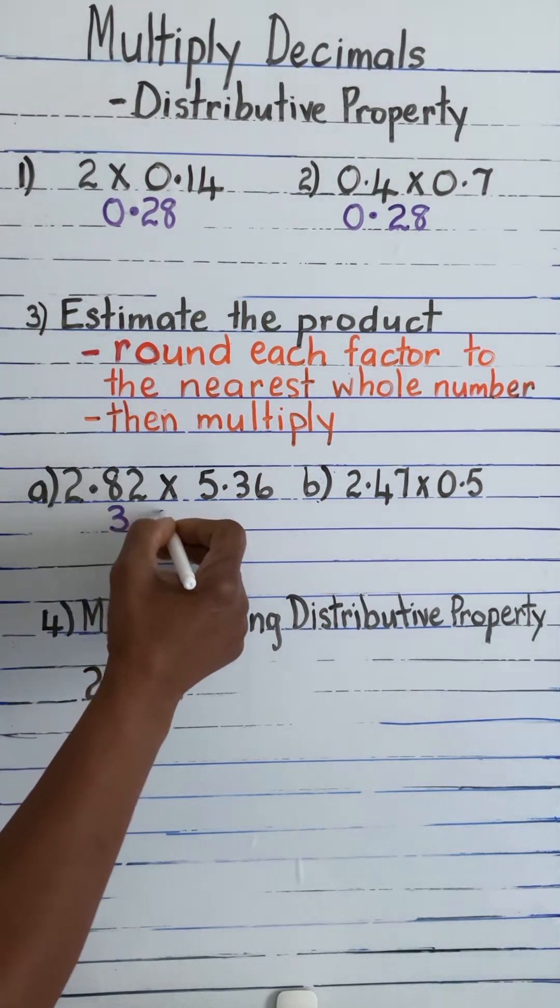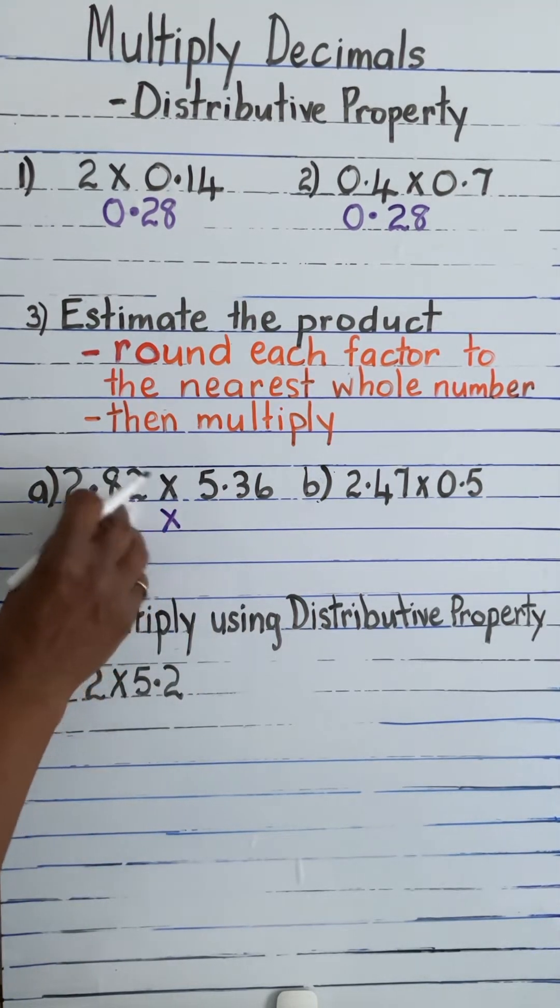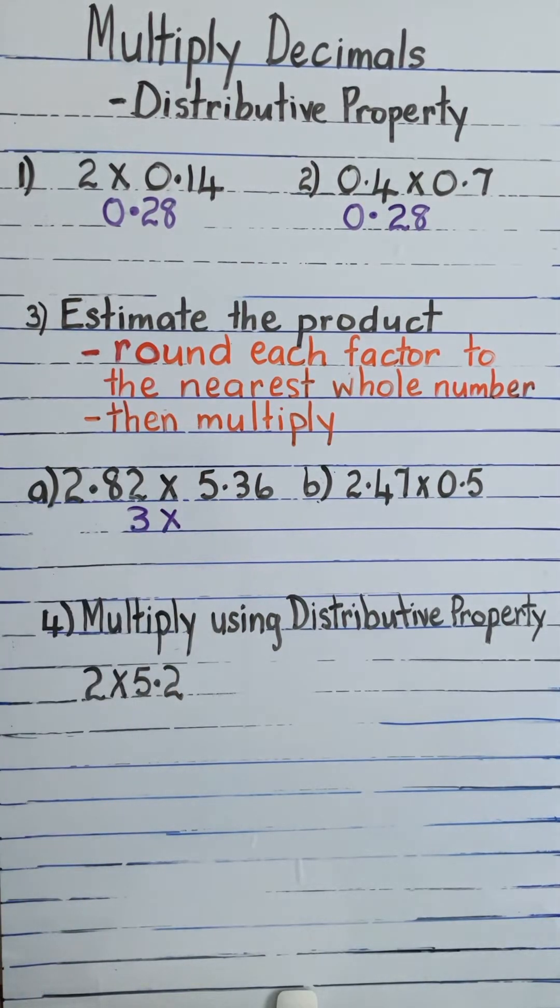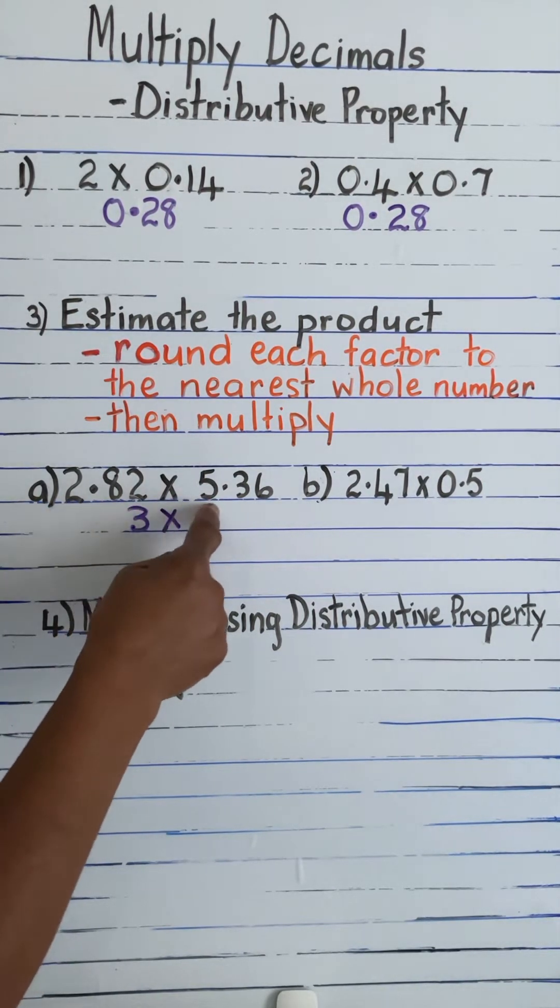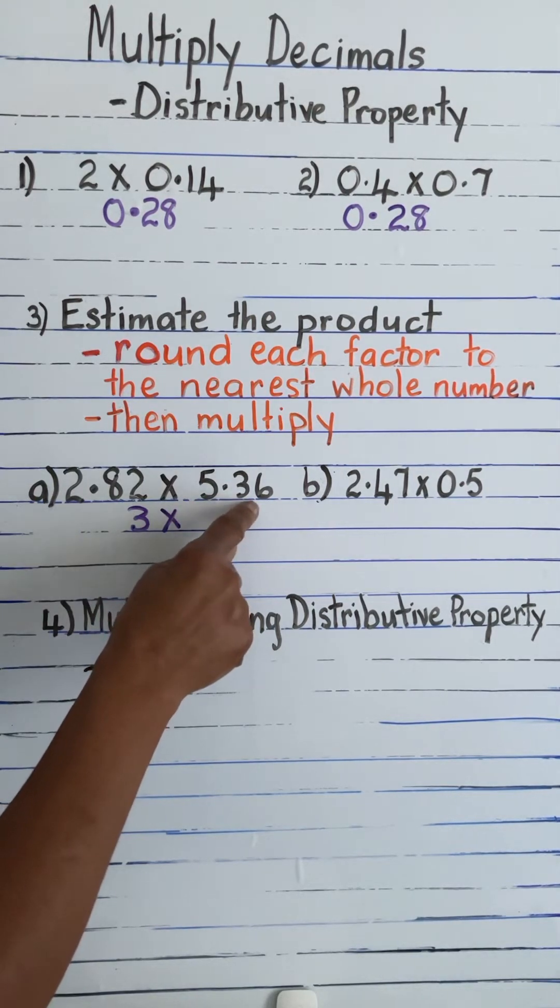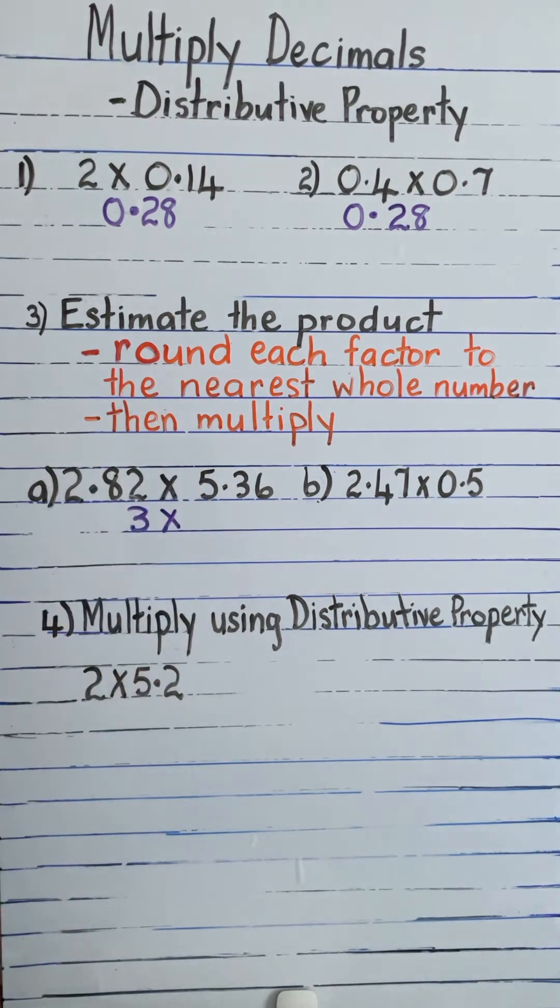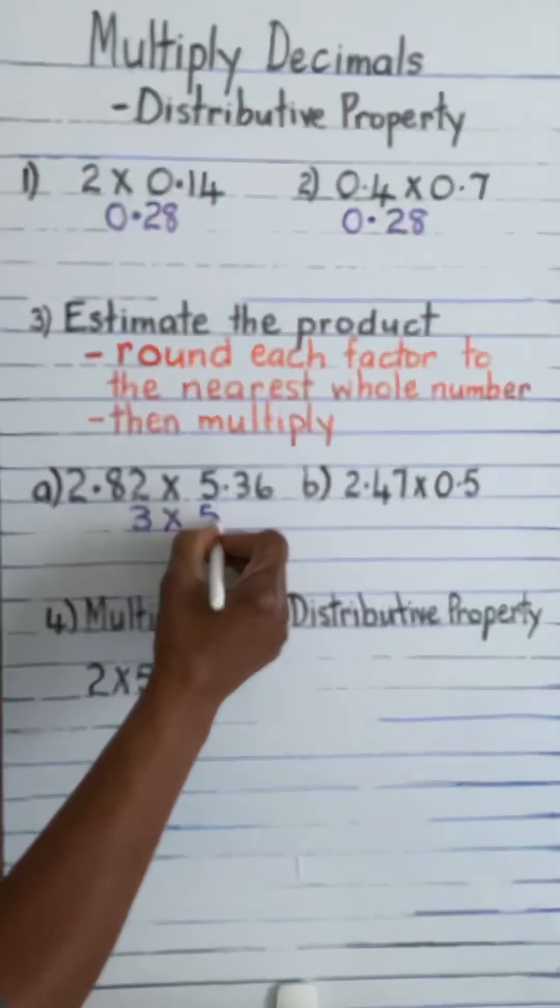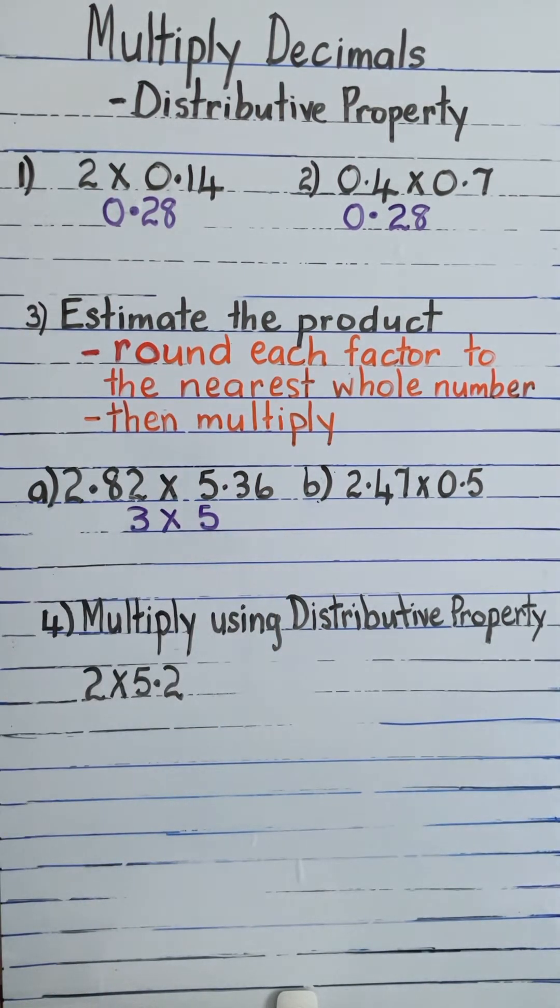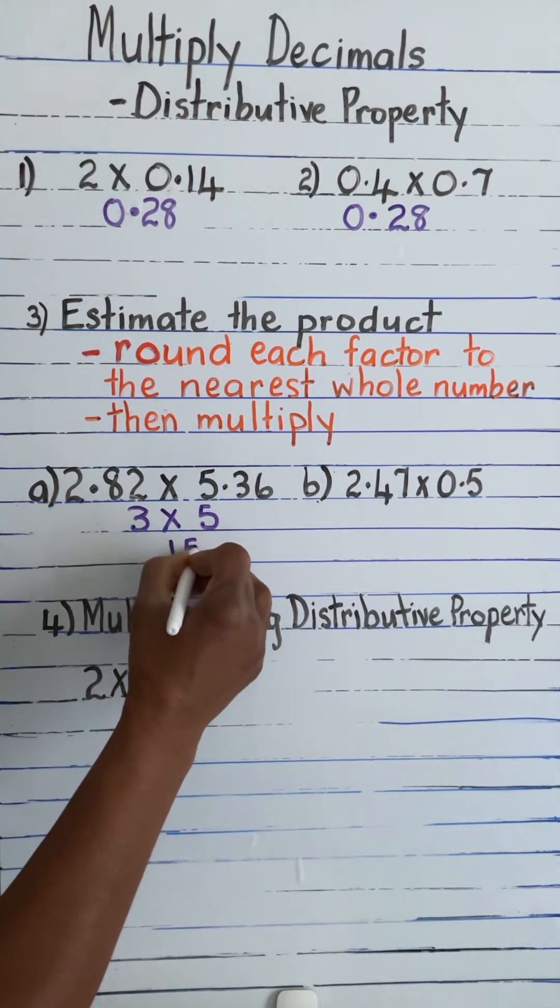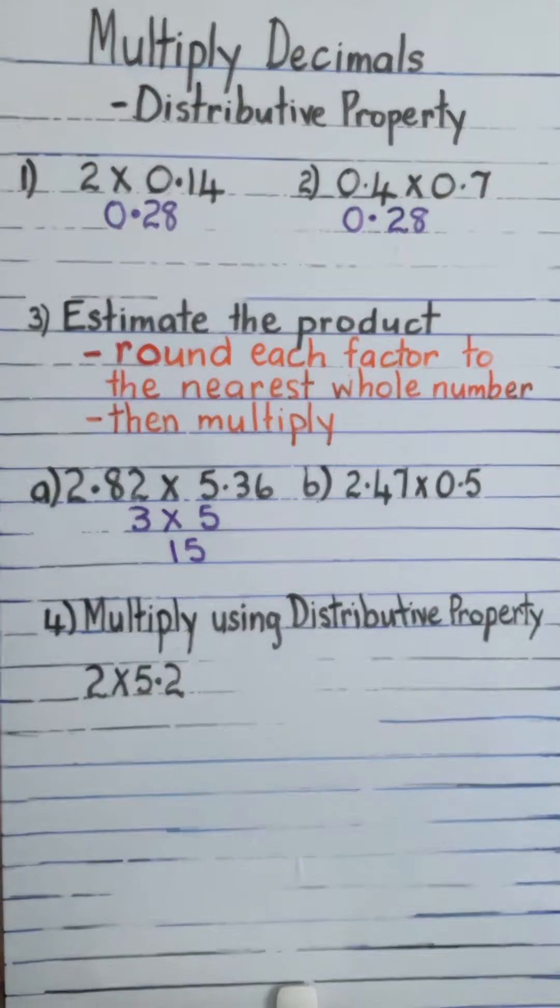3 times 5.36. 5 is a rounded number. We look at the next digit and we see it's less than 5, so we round down—that means we keep the rounding number, so this is 5. Now we multiply: 3 times 5 is 15. So 2.82 times 5.36 is estimated to be 15.